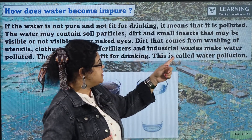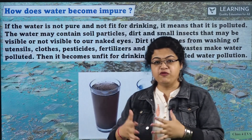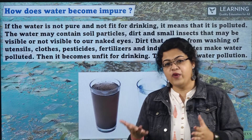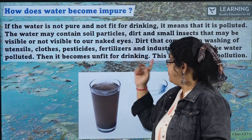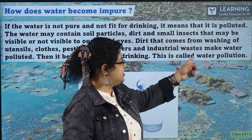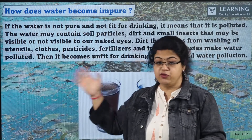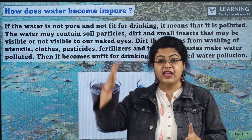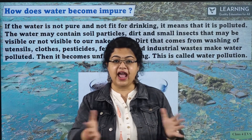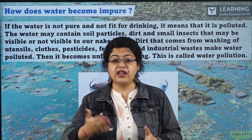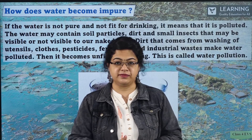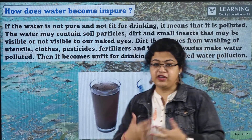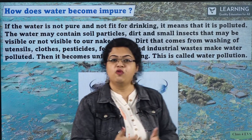Dirt that comes from washing utensils — when we wash utensils, the water that comes out is wastewater. Clothes, pesticides, fertilizers and industrial waste make water polluted. The industries give out wastewater that comes through canals and mixes into lakes, ponds and rivers. So, the industries are polluting our water resources. Due to this pollution, the water is becoming unfit for our use. This is called water pollution.